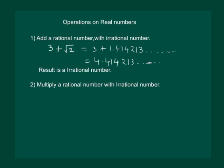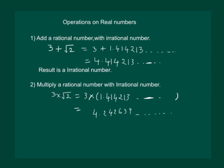Let us now check what happens if we multiply a rational number with an irrational number. On multiplication, it will give us a non-terminating non-recurring number, so the result is again an irrational number.